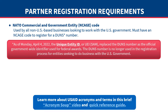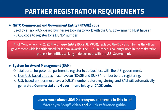U.S.-based businesses also must apply for a DUNS number before applying for USAID awards. Finally, both U.S.-based and non-U.S.-based businesses need to register with the System for Award Management, or SAM — the official platform for registering to do business with the U.S. government. If you are a U.S.-based business, this registration will automatically generate a commercial and government entity code, also called a CAGE code. You can learn more about USAID acronyms and terms in the Acronym Soup video and Quick Reference Guide.